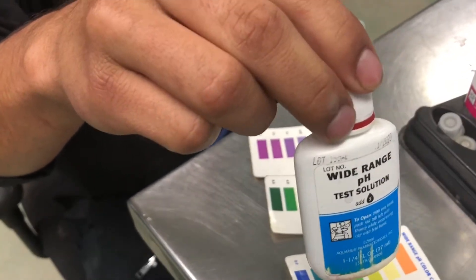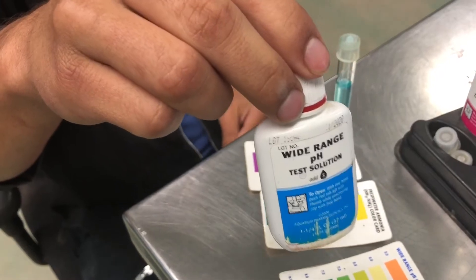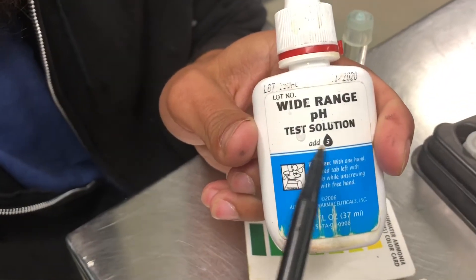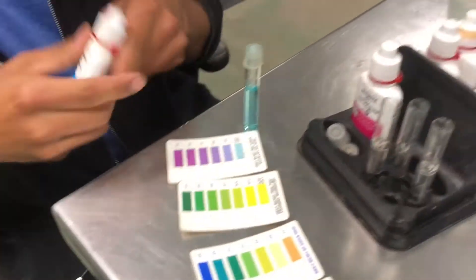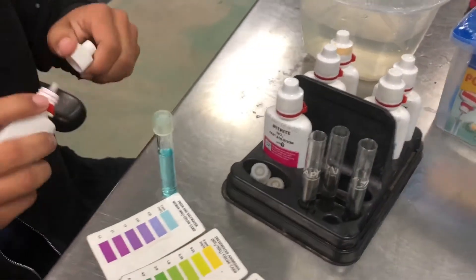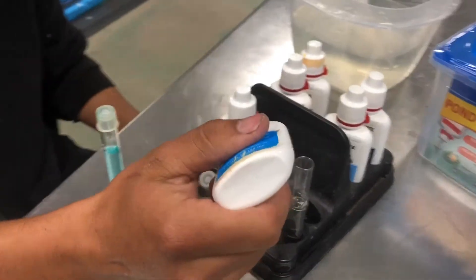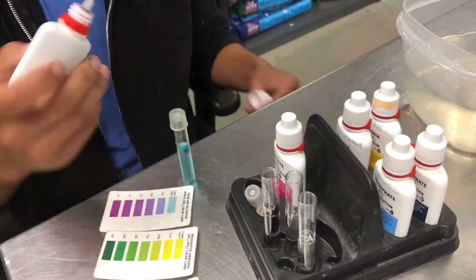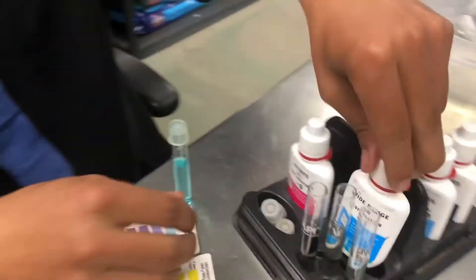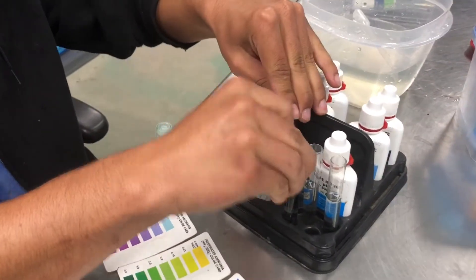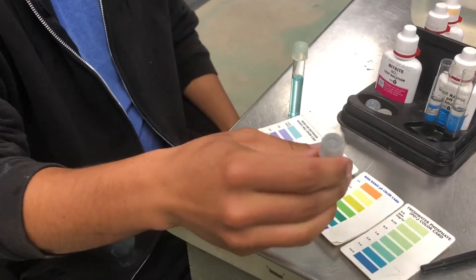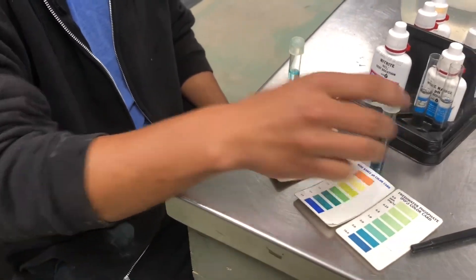The next one is the pH. And this one also says add five drops. So, same thing. Same thing, put the cap on, give it a good shake. Go ahead and set it next to your card.